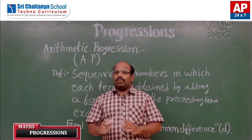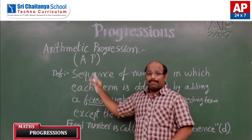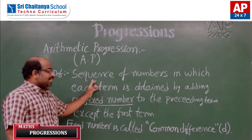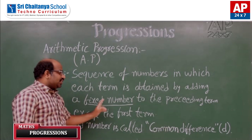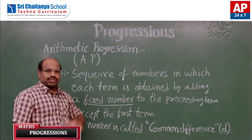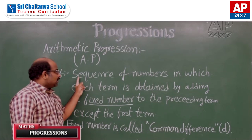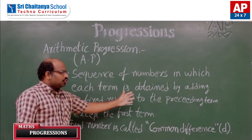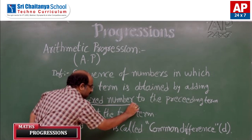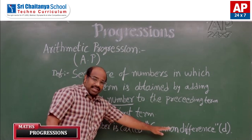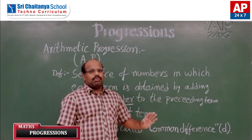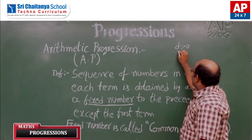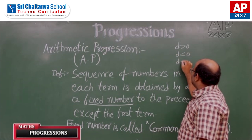Now we will discuss arithmetic progression, simply called AP. AP stands for arithmetic progression. What is an arithmetic progression? A sequence of numbers in which each term is obtained by adding a fixed number to the preceding term, except the first term. This fixed number is called the common difference, indicated by small d. The common difference may be positive, negative, or zero.